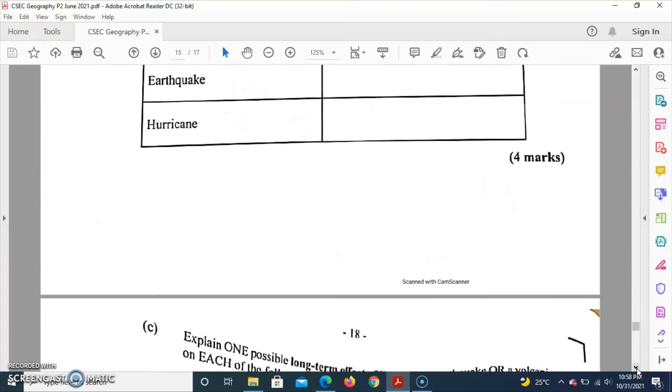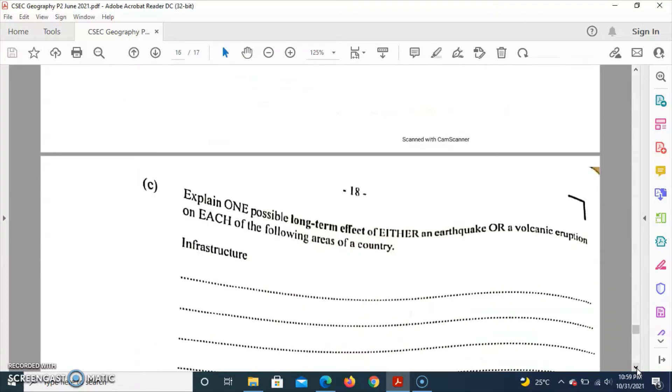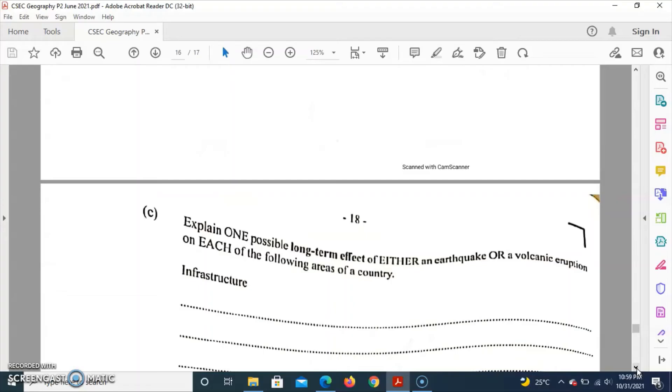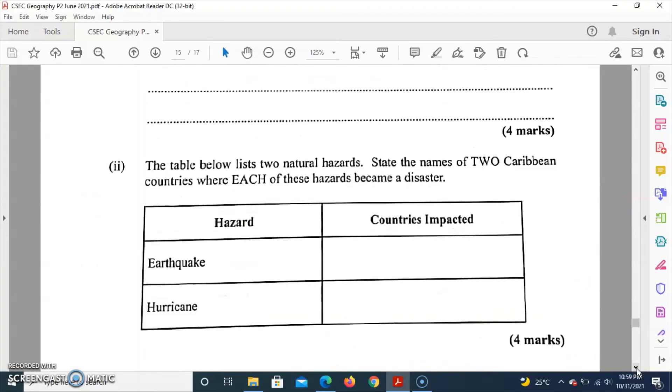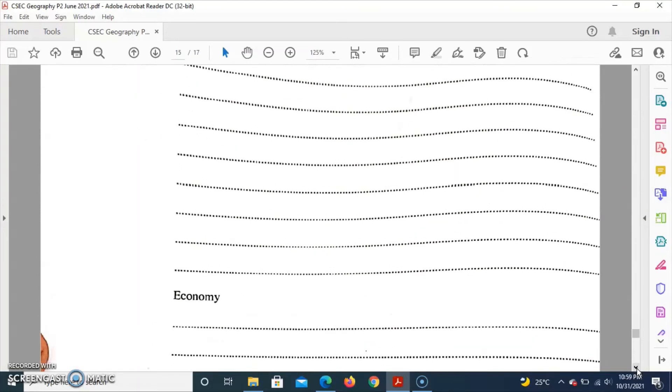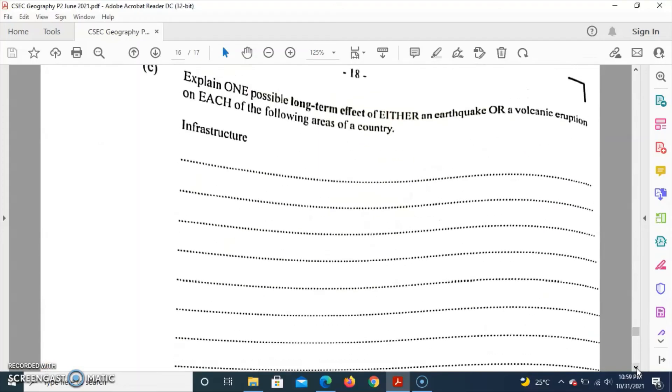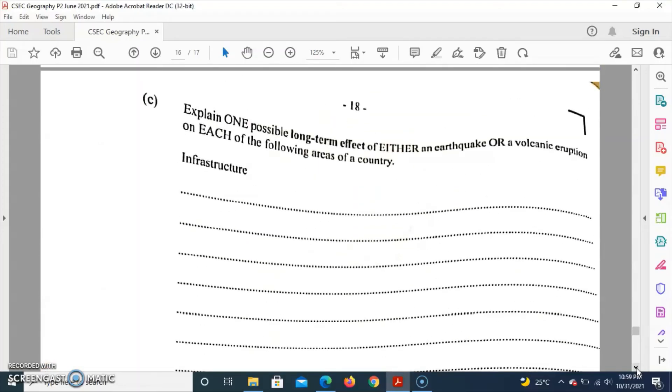So let's go to Part C. Part C asks to explain one possible long-term effect of either an earthquake or volcanic eruption on areas of a country. It's only one that you must focus on, but for video purposes I'll be doing both.